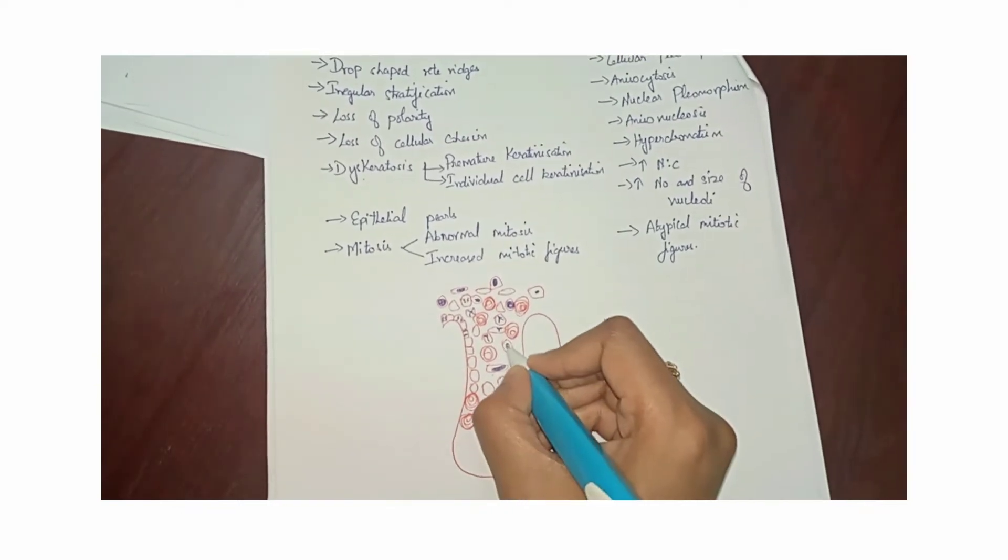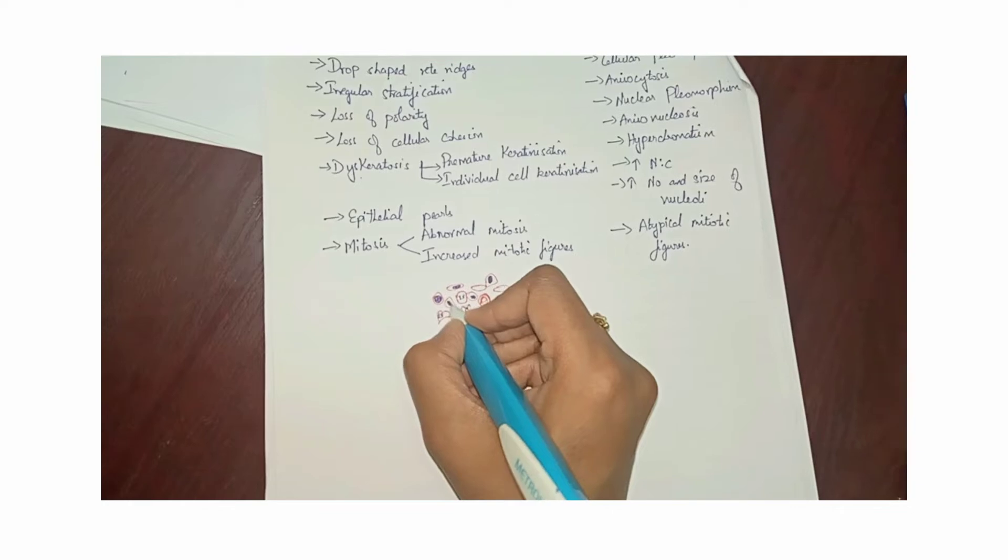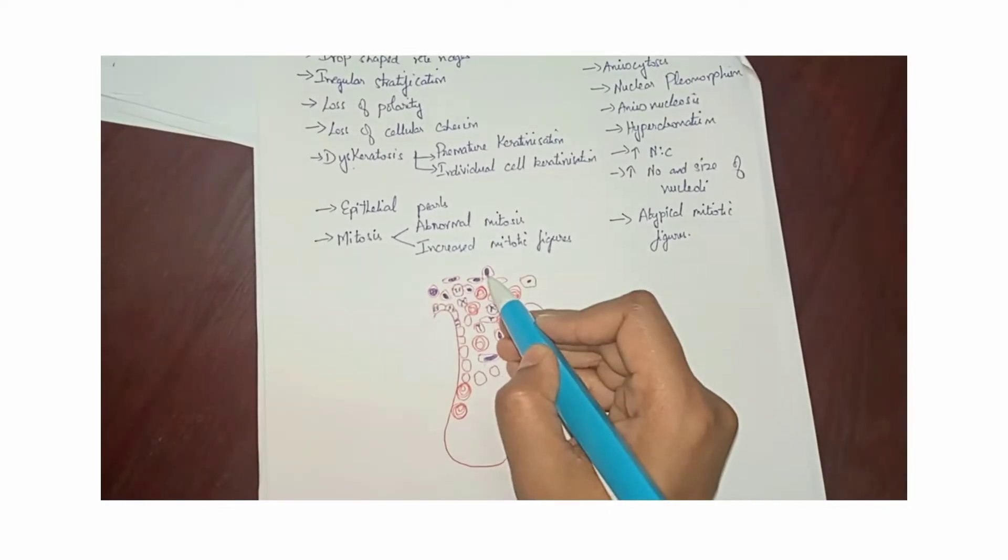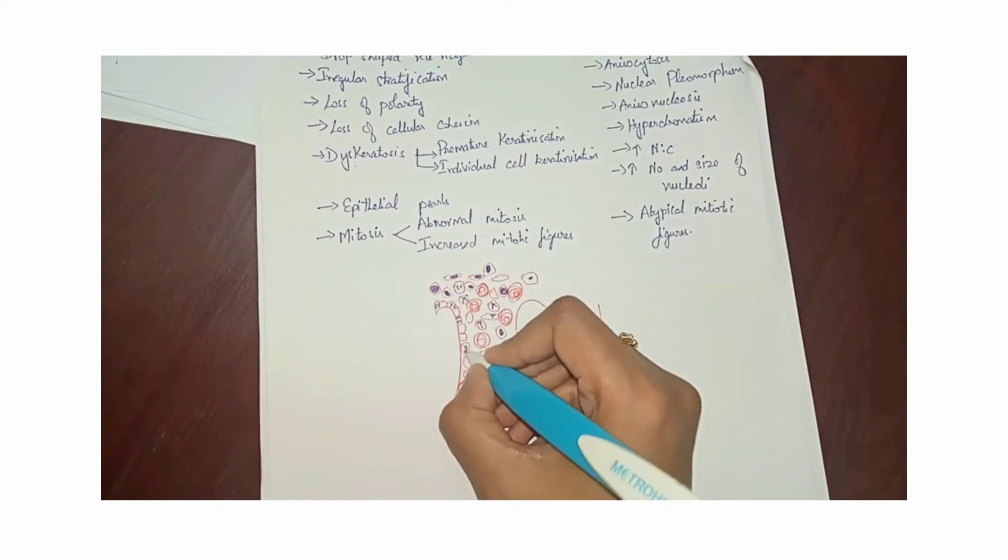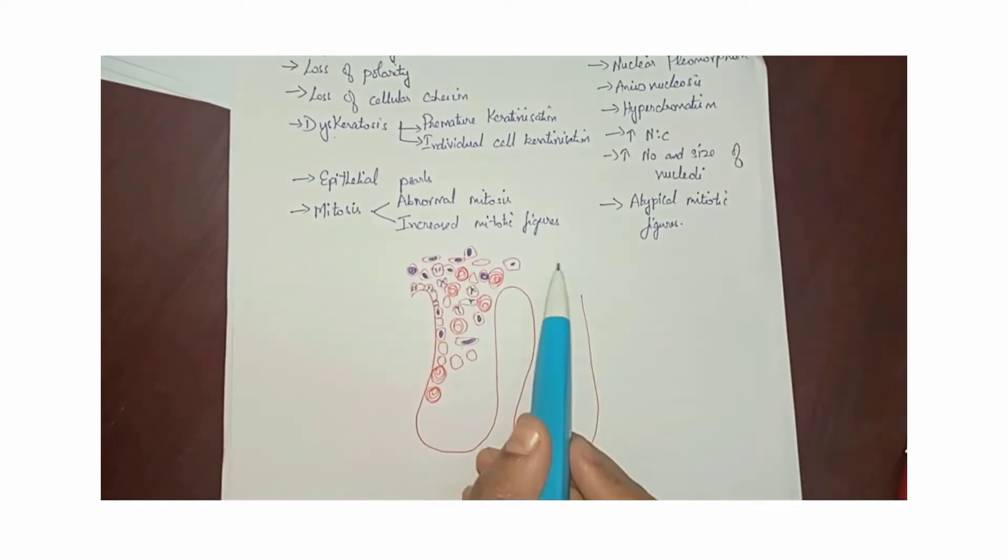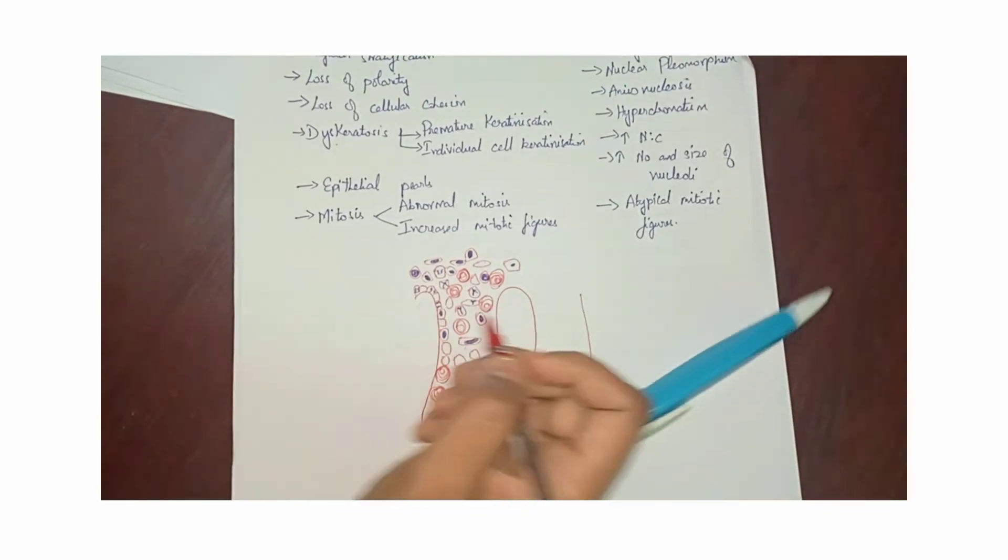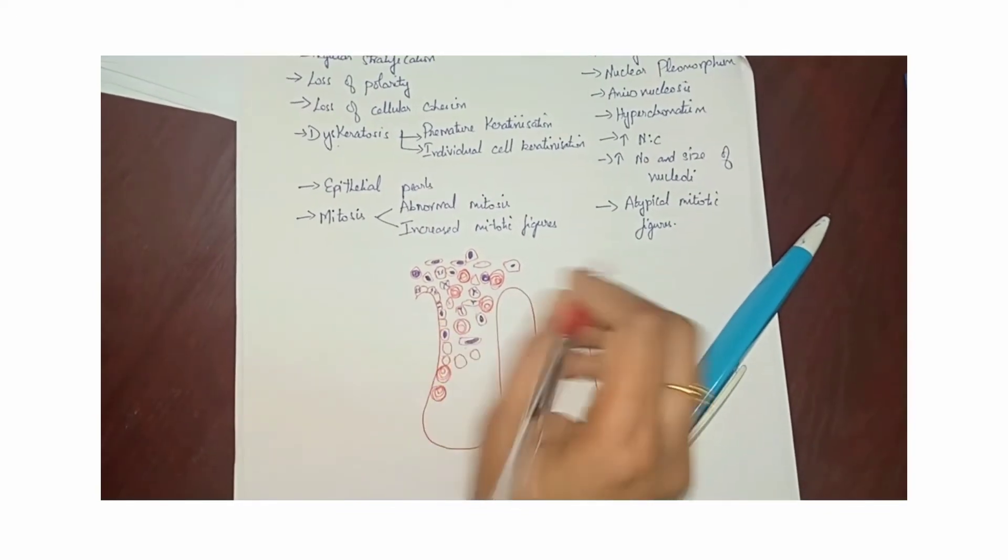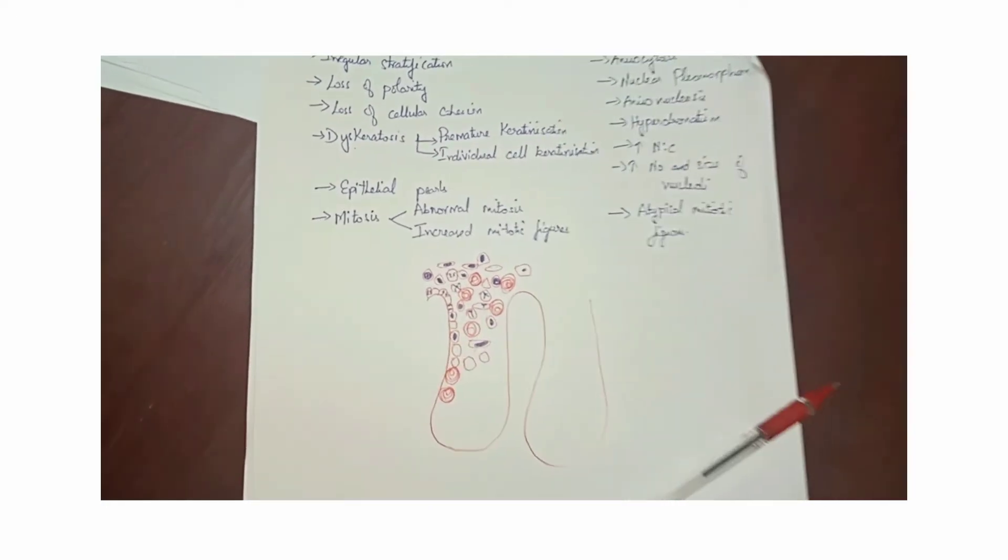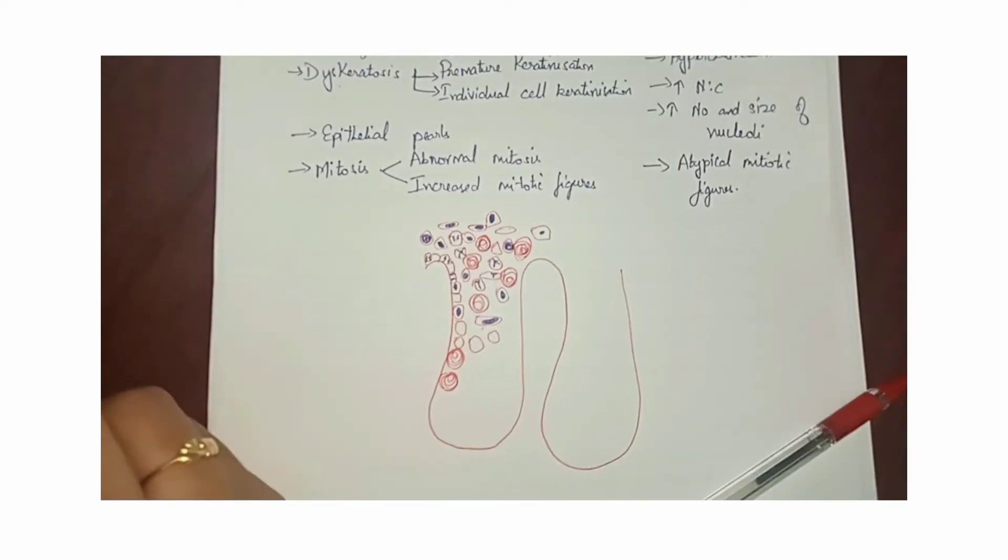The nucleus will exhibit hyperchromatism and the nuclear cytoplasmic ratio, if we see, will be increased compared to the normal epithelial cell, and the nucleoli will be increased. So increased prominence of nucleoli.